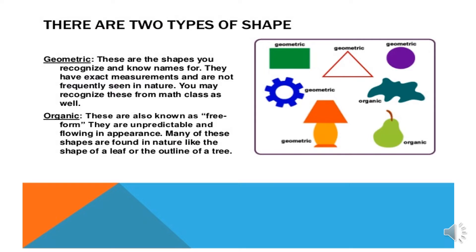There are two types of shapes. We have geometric and organic. Talking about geometric class, these are the shapes you recognize and know names for. They have exact measurements and are not frequently seen in nature. You may recognize these from math class as well. Whereas organic means these are also known as free form. They are unpredictable and flowing in appearance. Many of these shapes are found in nature, like the shape of a leaf or the outline of a tree.